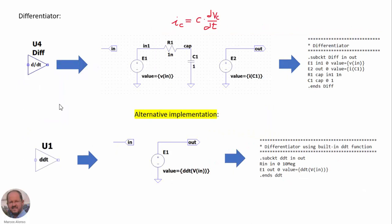In the case of the differentiator, we saw this implementation before using a capacitor. The current through the capacitor is going to be the derivative of the voltage, selecting a capacitance equal to 1. But again, we can do also an alternative implementation using the DDT function that is already implemented in LTSpice. We are going to have also in our control library this other symbol to implement the differentiator using this function, and here we have again the description for this new component.